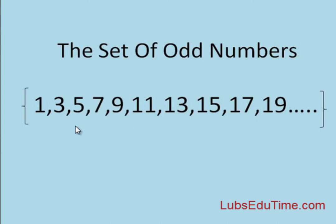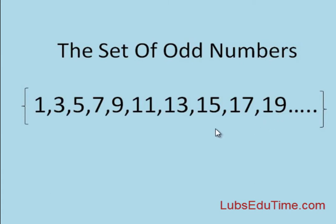They end with 1, 3, 5, 7, 9. For example, 43 is odd because it ends with 3. 19 is odd because it ends with 9.